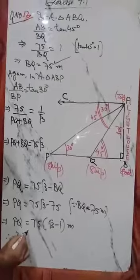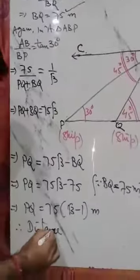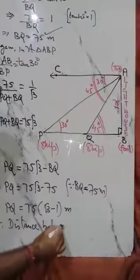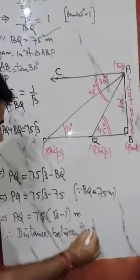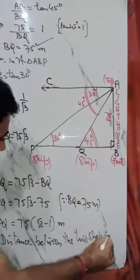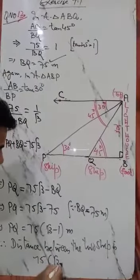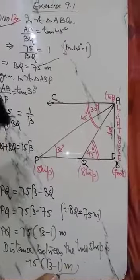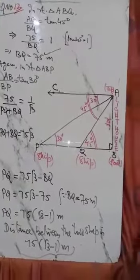Therefore, distance between the two ships is 75 times (root 3 minus 1) meter. Very easy questions for practice.